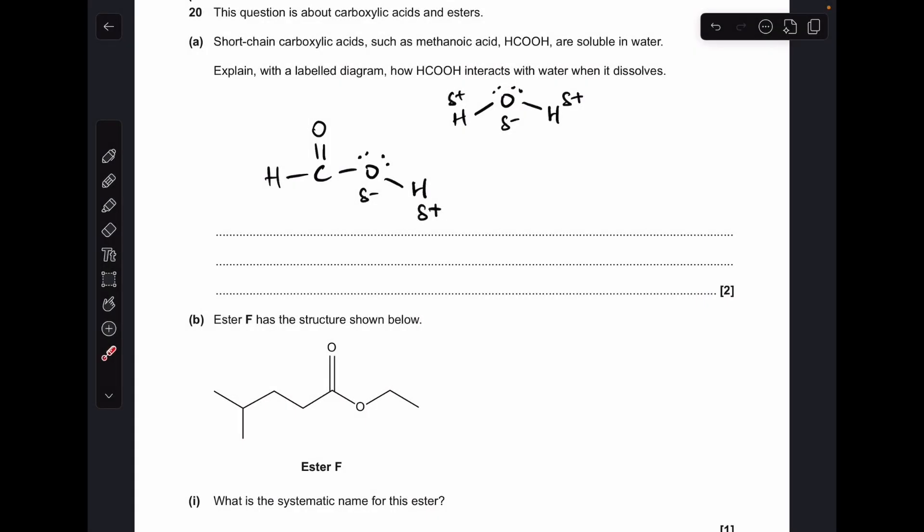So part A, we've got to draw up a methanoic acid molecule and water molecule, showing the dipole across the OH bonds on the two molecules and the lone pairs as well on the oxygens. So the interaction is obviously a hydrogen bond between the lone pair on an oxygen and the hydrogen of a neighboring molecule. So I'm going to go for that one there. We'll just label that up as a hydrogen bond. And I'm just going to say HCOOH, methanoic acid, forms hydrogen bonds with water when it dissolves.